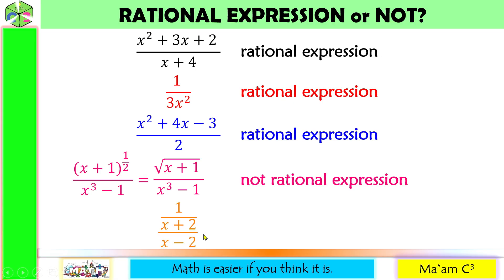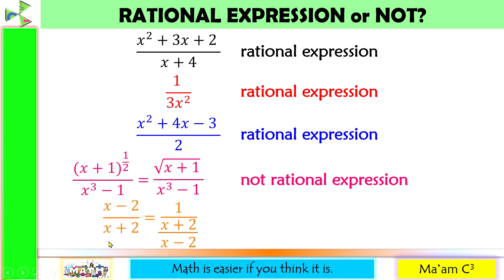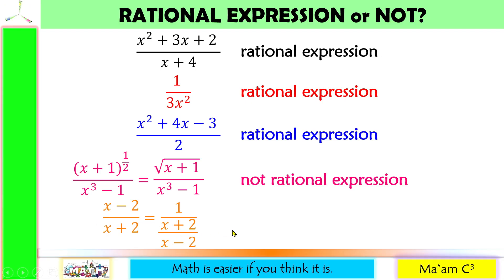Last one — is this a polynomial? If we simplify this expression, this will become (x minus 2) all over (x plus 2). x minus 2 is a polynomial. x plus 2 is a polynomial. Polynomial divided by a polynomial is a rational expression.